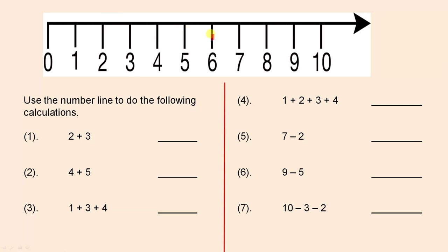Here's the number line — it starts at zero and goes up by ones up to ten, so these are just the counting numbers up to ten, and the arrow means it continues on. Use the number line to do the following calculations. I know that you can do these calculations in your head, but I'm just showing you how to use the number line.